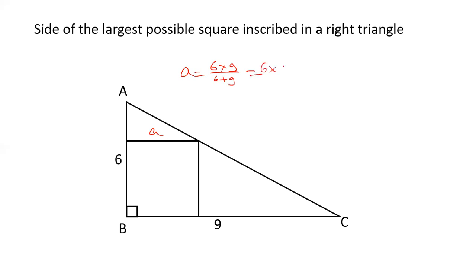6 into 9 upon 15. 3 into 6, 3 into 15. 2 nines are 18 by 5, which is 3.6. So this side will be 3.6 centimeters.